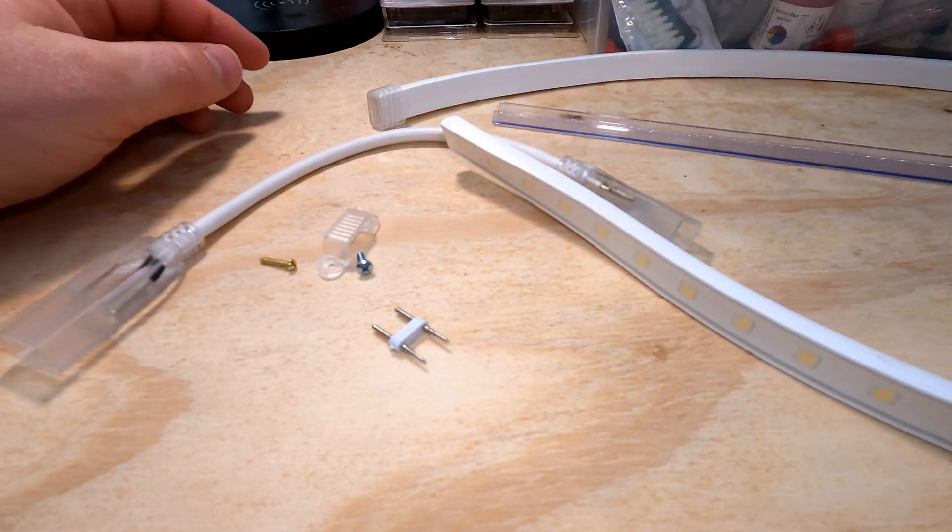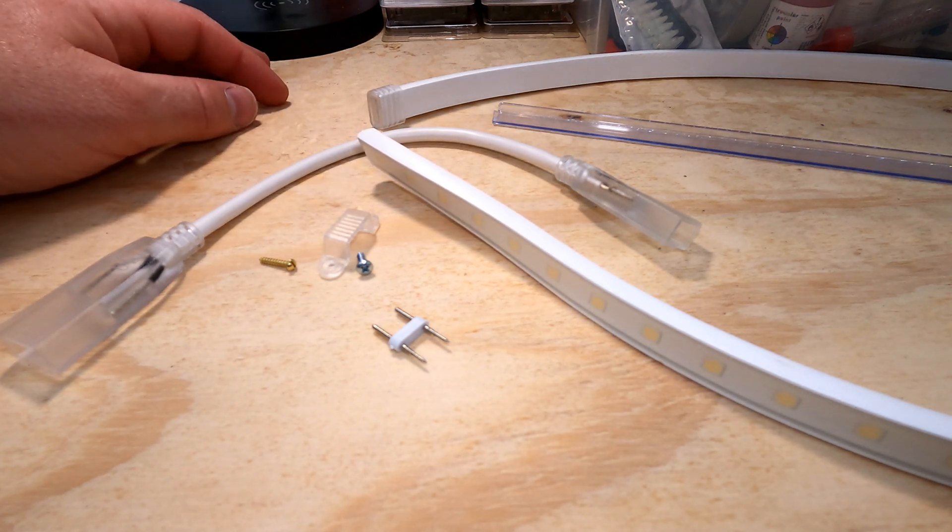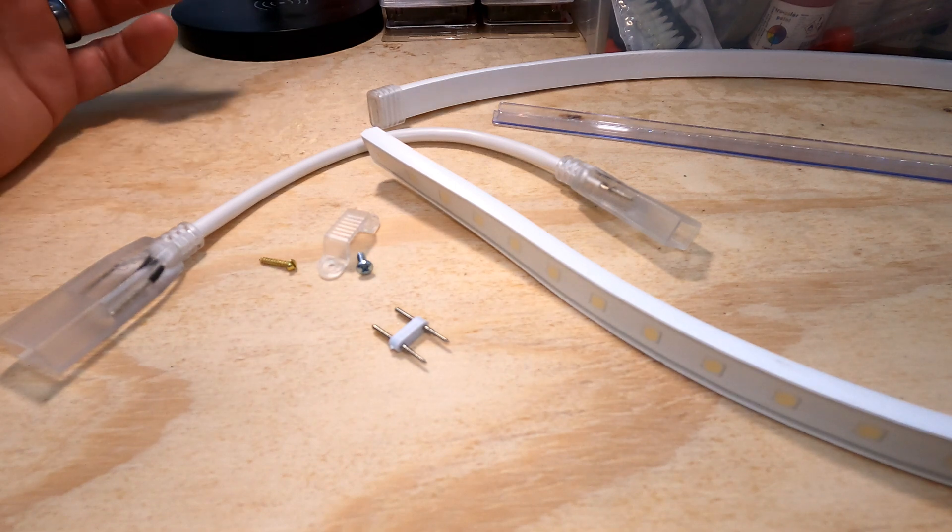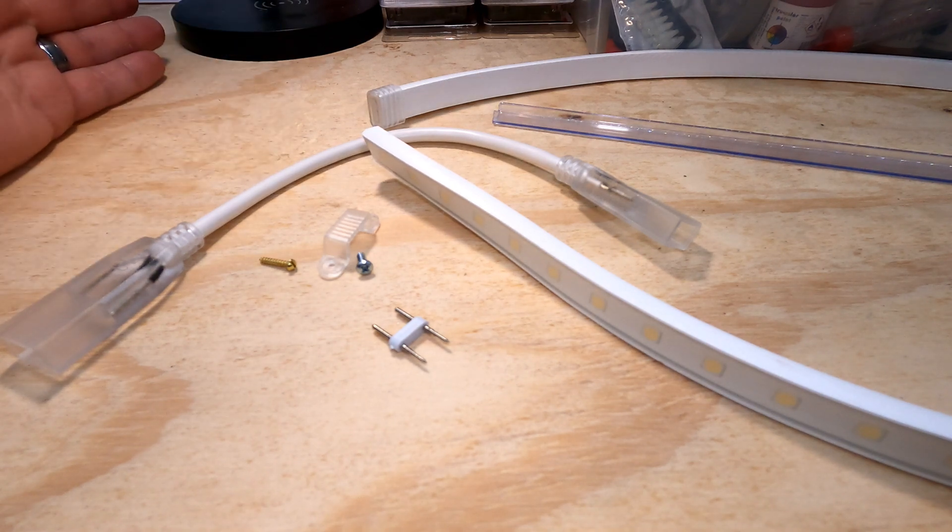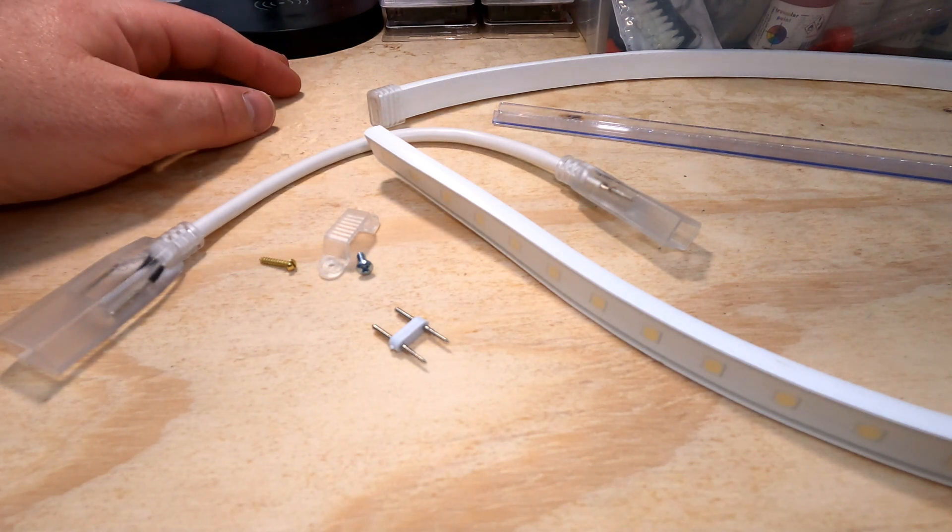So these are the SC5050 LEDs. I'm using the 5000 Kelvin cool white on my layout. I do have another video where I show installing all of these lights, at least on the upper deck. I had a little over a hundred feet, yeah, 120 feet, maybe something like that on the upper deck.